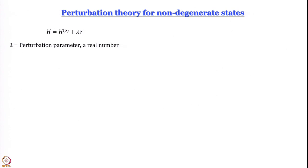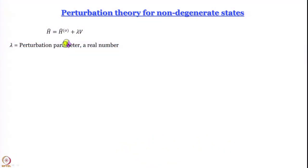Now we are writing the perturbation to the Hamiltonian a little differently. Earlier, the convention we used was: Hamiltonian equals zeroth order Hamiltonian plus first order plus second order and so forth, giving many terms. Now we write it in a more compact form: the Hamiltonian is the unperturbed Hamiltonian plus lambda times V, where lambda is a perturbation parameter and V contains all orders of perturbation.